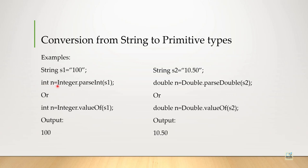int n equal to integer dot parseInt s1. Here, integer is the wrapper class. parseInt is the method and the meaning of parseInt is to convert. Parse means convert. So, we have the wrapper class integer that is used to convert any string to integer data type.